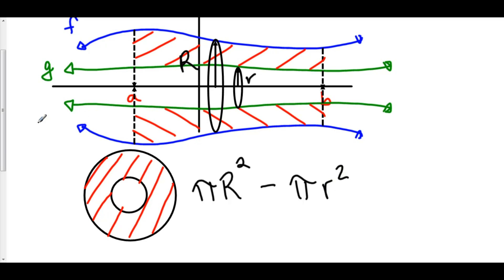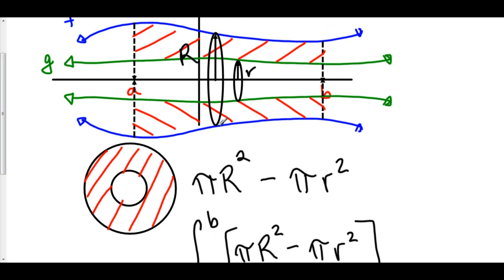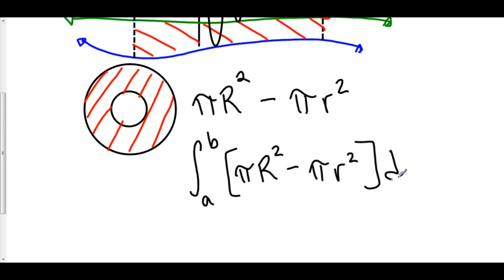And so, the volume of this solid is the infinite sum from A to B of all of these infinitesimal washer cross-sections. So we are finding the integral from A to B of the area of these cross-sections, which is given by pi big R squared minus pi little r squared. And of course, since these cross-sections are perpendicular to the x-axis, we're stacking them up along the x-axis. And so we're going to call this dx because we're taking the integral with respect to x.